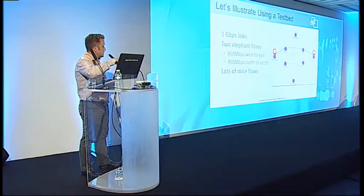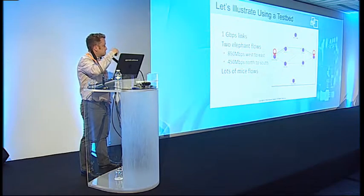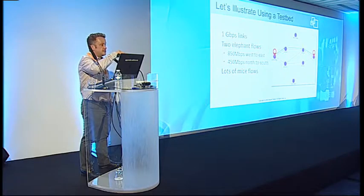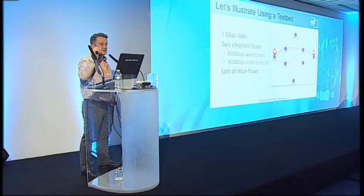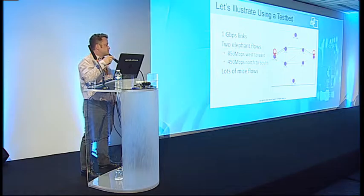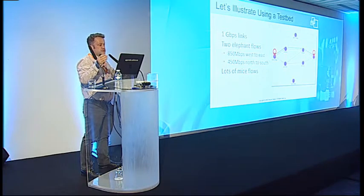Let me illustrate with an example. We have a test pad — you can see the demo upstairs if you stop by. There is one elephant flow going from west to east and another smaller one going north to south. This is a gigabit-per-second network and the elephant flow is 850 megabits per second. No matter how you reroute it, it will create 85% link utilization on whatever link it hits. The only way to eliminate congestion is to split it across multiple paths.